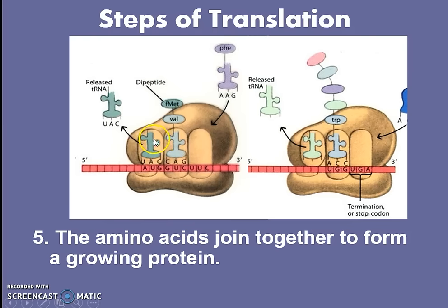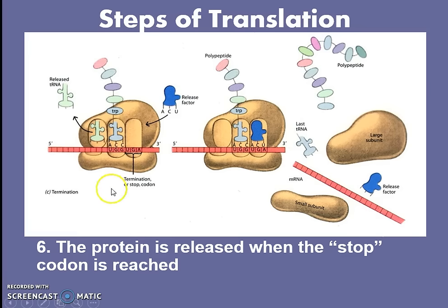Eventually the ribosome will continue to move along the messenger RNA and read it — ribosomes are the readers. As they move, a new codon opens up and a new tRNA trucks in, bringing the correct amino acid to the correct codon. These amino acids bond together through peptide bonds to make a growing protein. Eventually a codon will show up called the stop or release codon, which forces the tRNA to eject, the protein to be released, and the ribosome to disassemble. Until we reach a stop codon, amino acids will continue to be trucked in by tRNA.